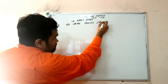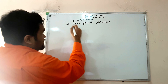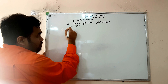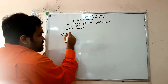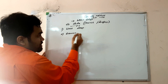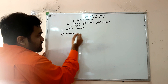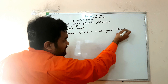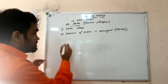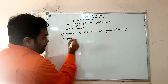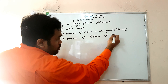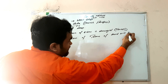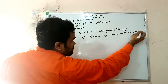Axilla level damage is known as crutch paralysis. If it is at the axilla, there will be wrist drop. Second, extension of the elbow is affected because the triceps muscle, which helps in extension, will be affected. Third, sensation of the dorsum of the hand will also be affected if the damage is at the axilla level.